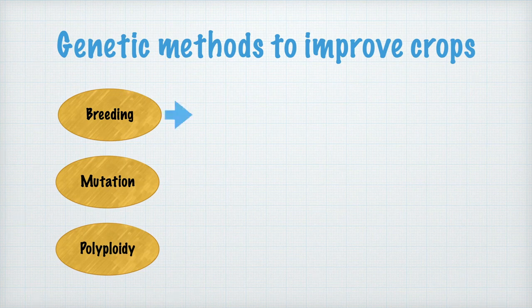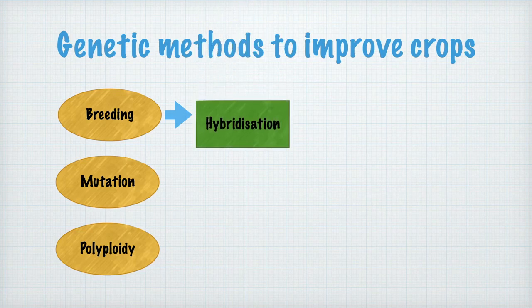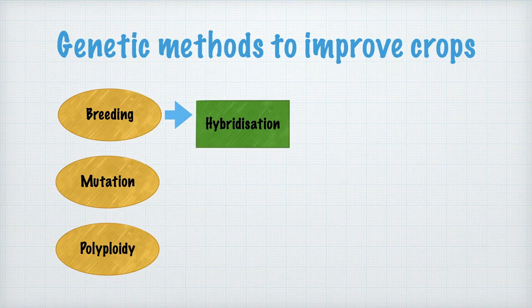Hybridization is the process of interbreeding between individuals of different species, or genetically divergent individuals from the same species. It breeds between genetically similar or dissimilar plants to produce hybrids. The offspring produced by hybridization may be fertile, partially fertile, or sterile, but the hybrid has higher yielding potential.